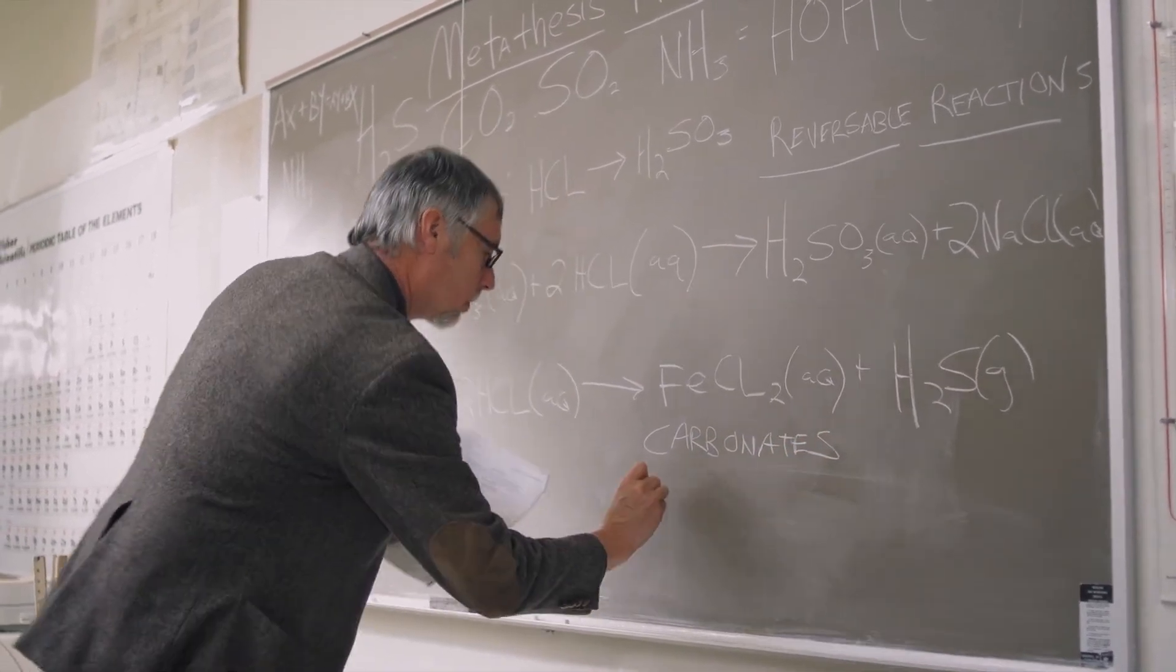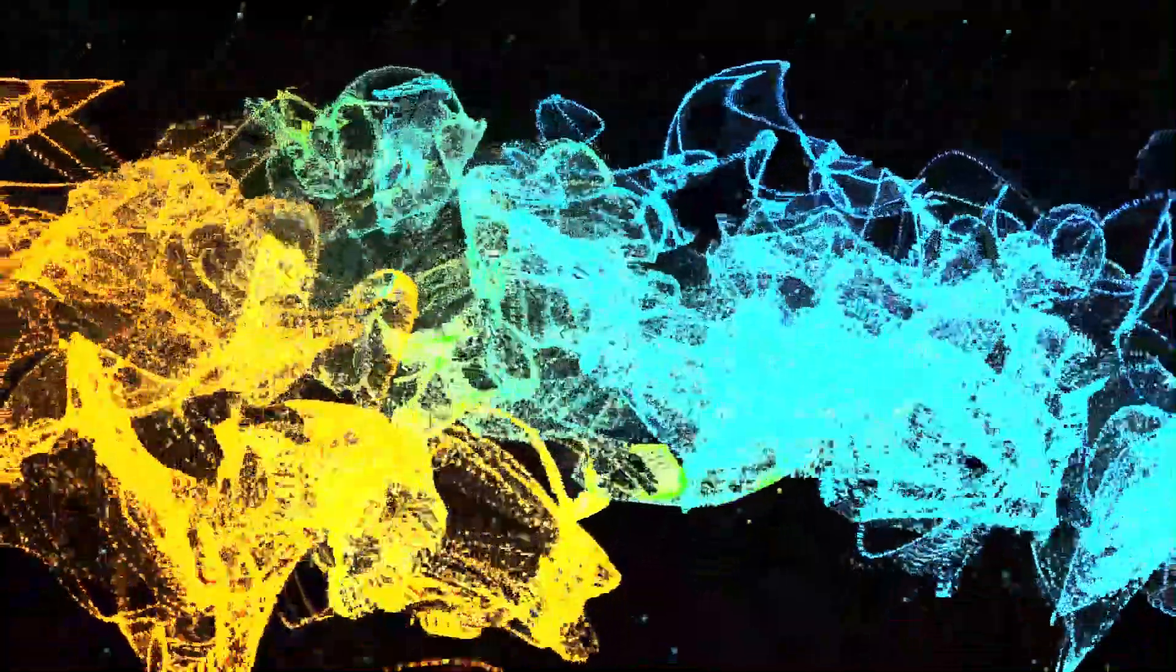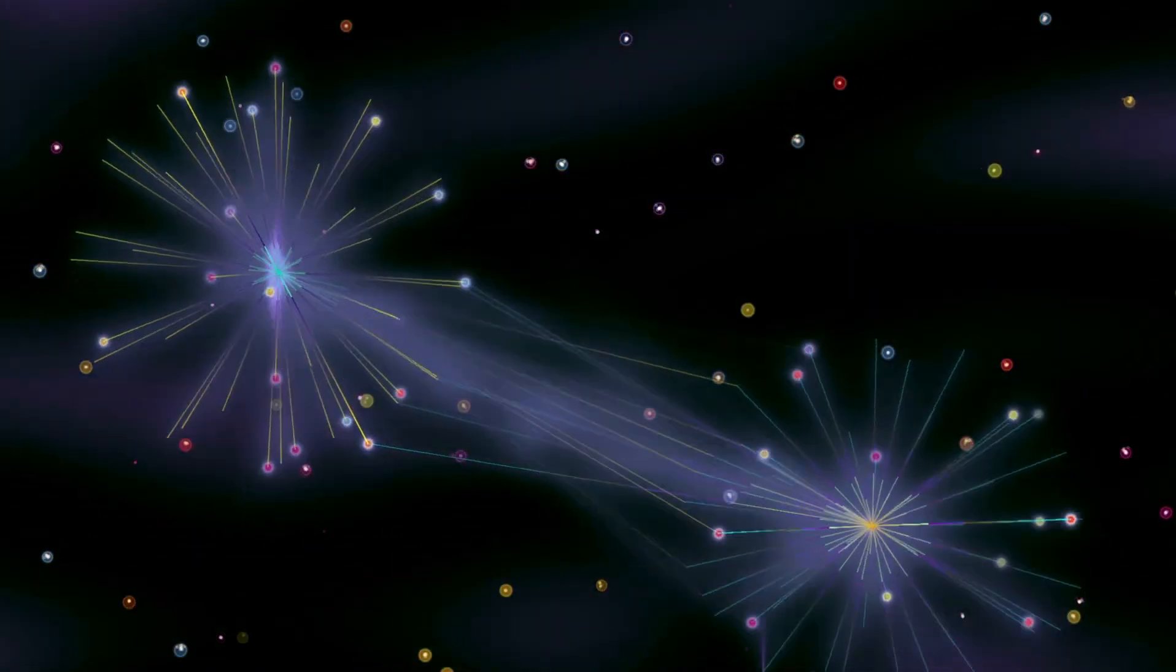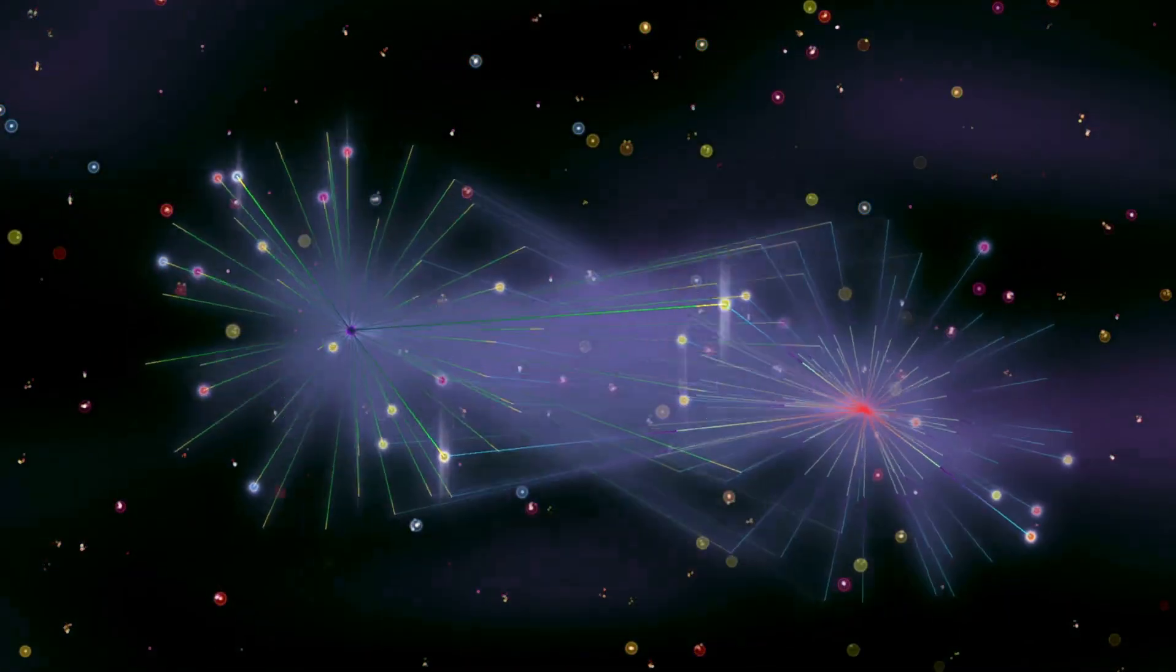Then there's the Higgs field, which Tong compares to molasses spread throughout the universe. The Higgs field gives mass to other particles, stopping them from moving at the speed of light. Tong notes that this comparison is not perfect because it suggests friction, while in reality, different particles interact with the Higgs field in various ways.